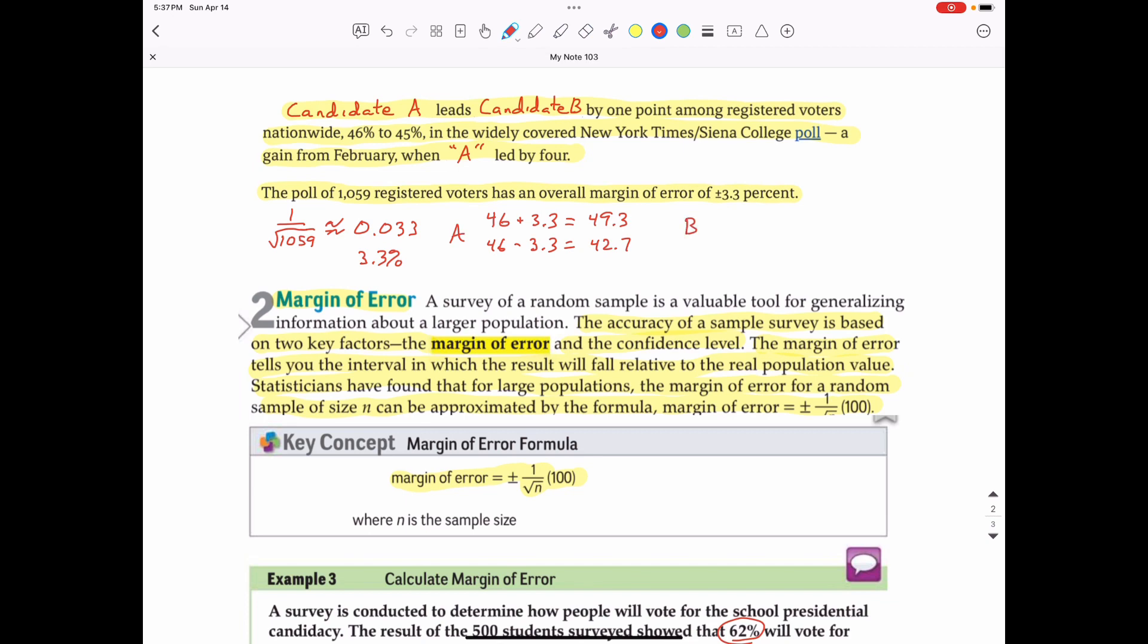Candidate B has got 45 percent of the vote, so it could be 3.3 percent higher, as high as 48.3 percent of the vote, or 3.3 percent lower, which would be as low as 41.7 percent of the vote. So candidate B could possibly get 48.3 percent, whereas candidate A could actually go as low as 42.7 percent. So even though the headline says candidate A is leading candidate B, because the lead is within the margin of error of 3.3 percent, it is possible that candidate A is not actually leading and may not win this election.